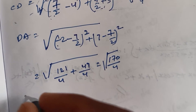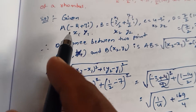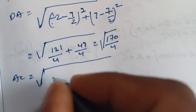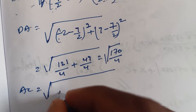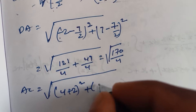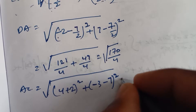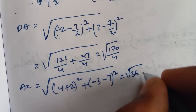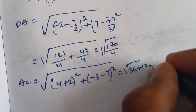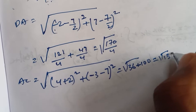Now we find the diagonal AC. A is x1 equals minus 2, y1 equals 7, and C is x2 equals 4, y2 equals minus 3. Substituting: root over 4 plus 2 whole square plus minus 3 minus 7 whole square equals root over 36 plus 100 equals root 136.